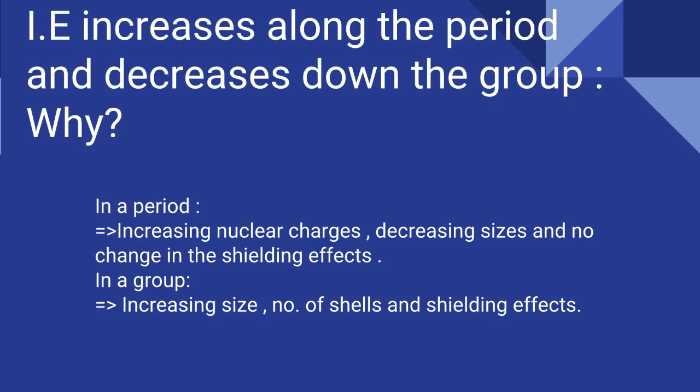In a period, there is an increase in nuclear charge, so automatically the atomic size is decreasing and there is no change in the shielding effect. In the modern periodic table, elements are arranged according to their increasing atomic numbers. As we move along the period, the number of protons and electrons are increasing, so the nuclear charges are increasing and the size of the atom is decreasing. So the removal of an electron becomes difficult from the outermost orbital, and that is why the general trend along the period is that the ionization energy value increases.